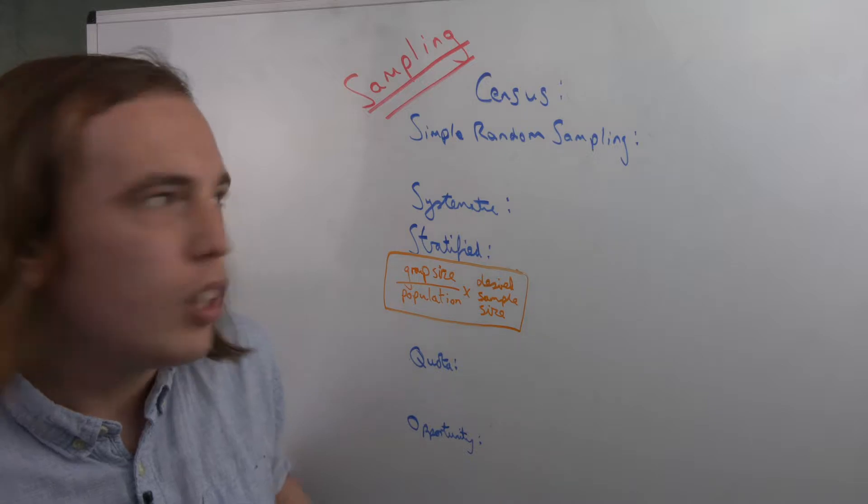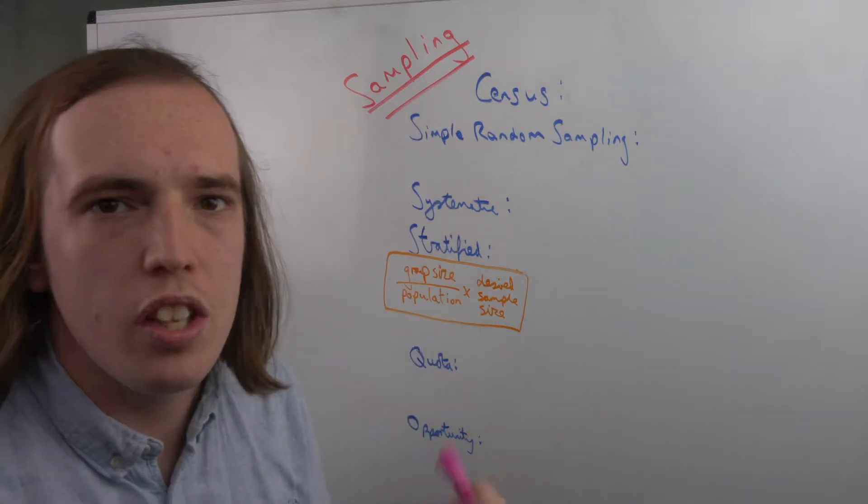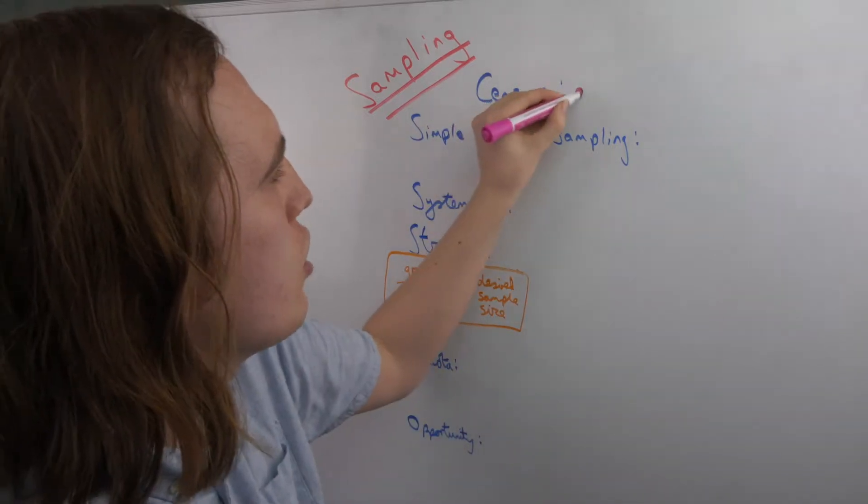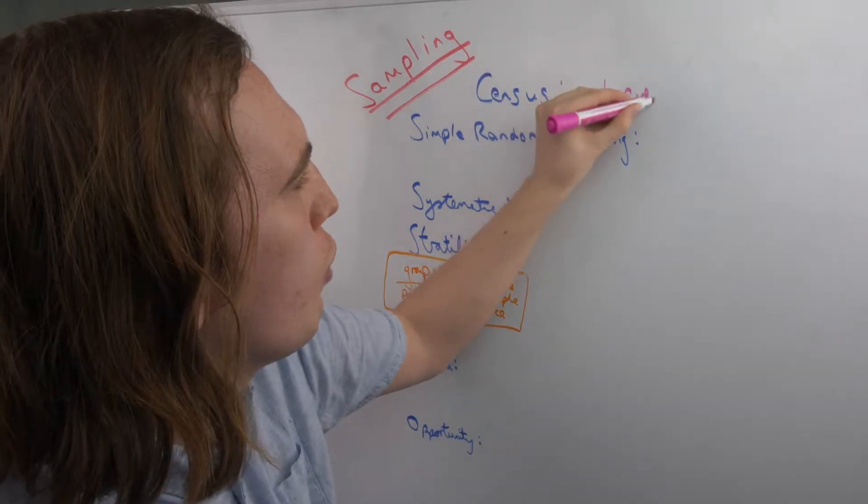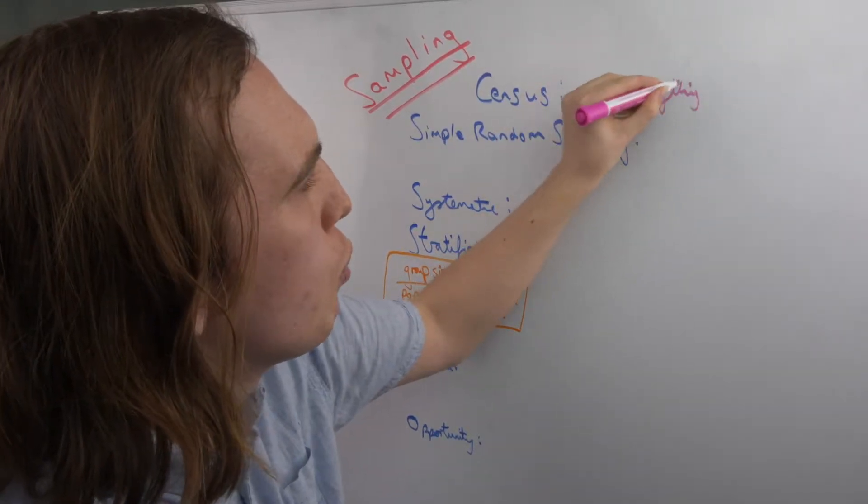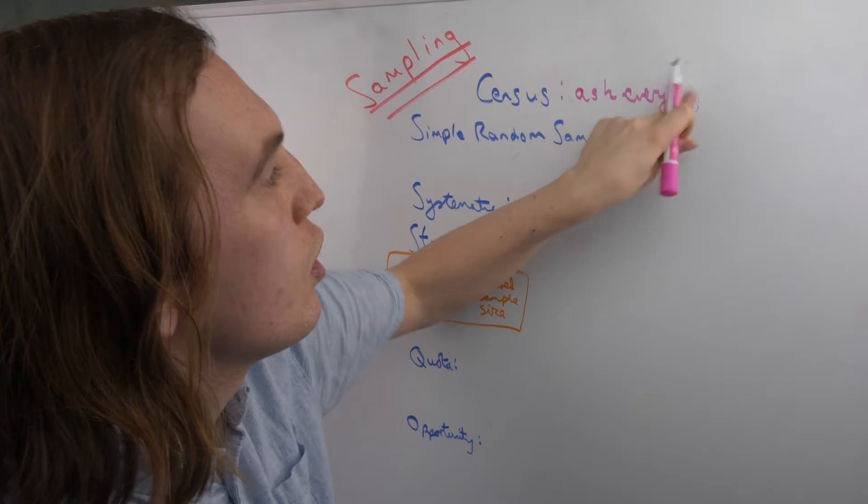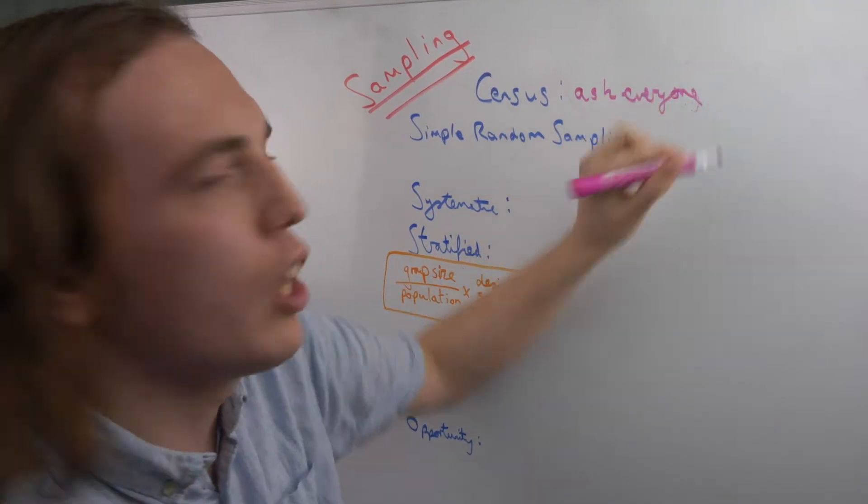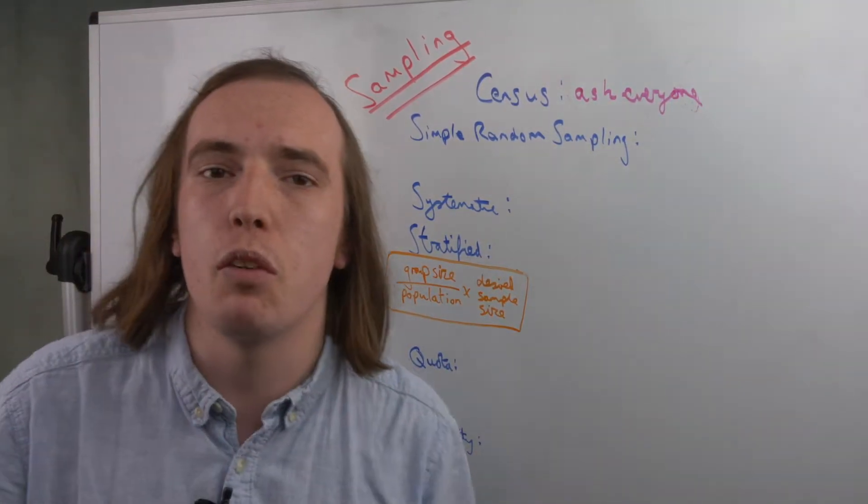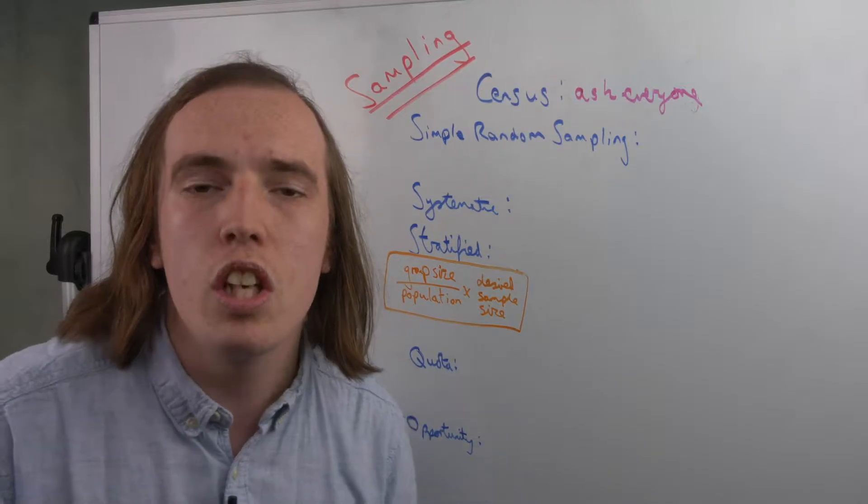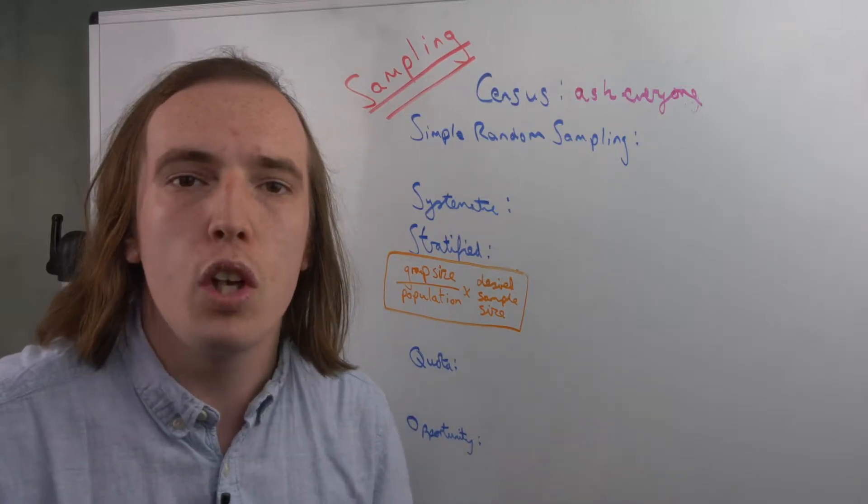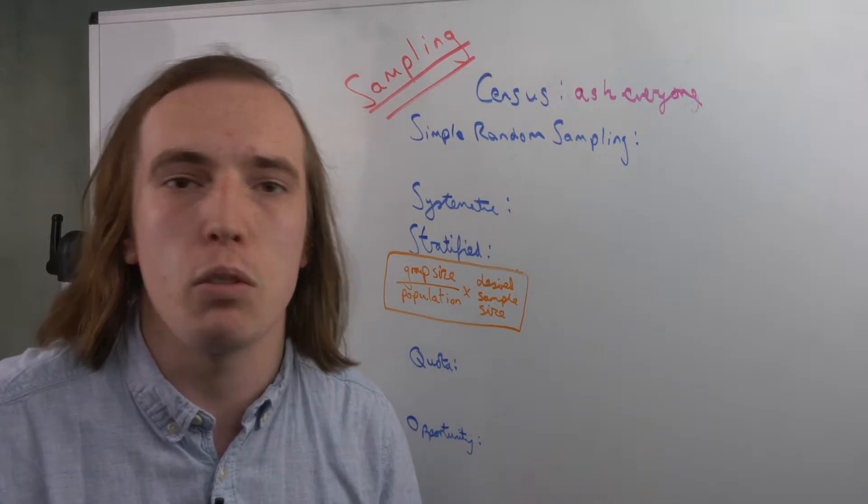These are your six. You have census, and this is where you would ask everyone what they think or what they do in this kind of situation. The government every few years will hold a national census to keep track of who everyone is, who's living in what houses, doing what job.